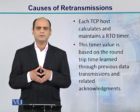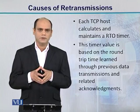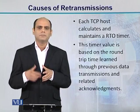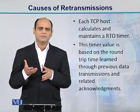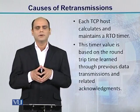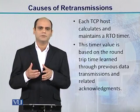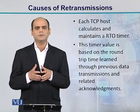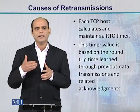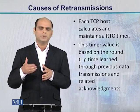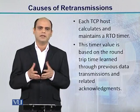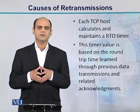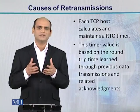Ab yeh jo RTO timer hota hai, yeh kiski upar depend kar raha hota hai? Yeh jo round trip time hota hai, iski upar depend kar raha hota hai. Ek static value nahi hoti. Agar hum ek static value lenge — let's say 5 milliseconds — kya hum 5 milliseconds sabhi packets ke liye le sakte hain? Nahi. Uski wajah kya hai? Jab ek sender aur receiver ke darmiyan packets hote hain, kya woh ek hi path ko follow kar rahe hote hain? Kya ek hi congestion hoti hai? Kya ek hi latency hogi ek host se doosre host ke upar? Nahi — yeh packet to packet vary kar rahi hogi.